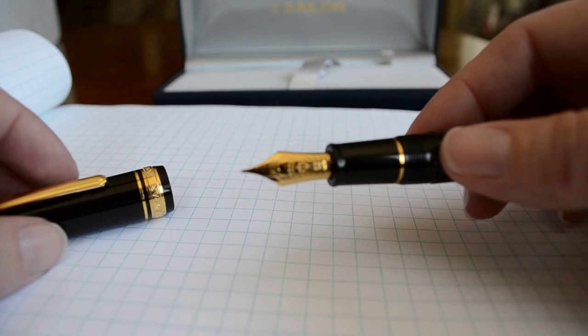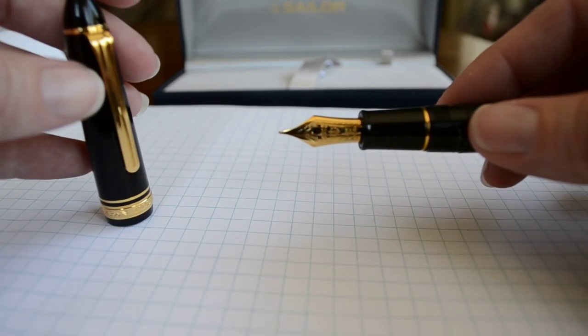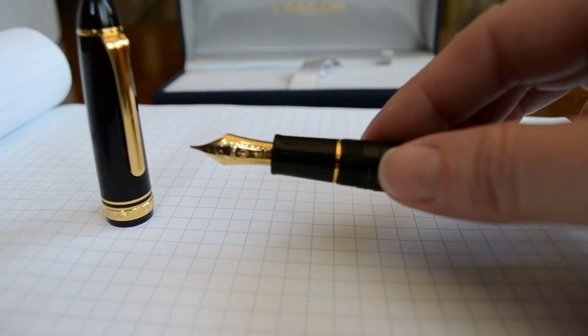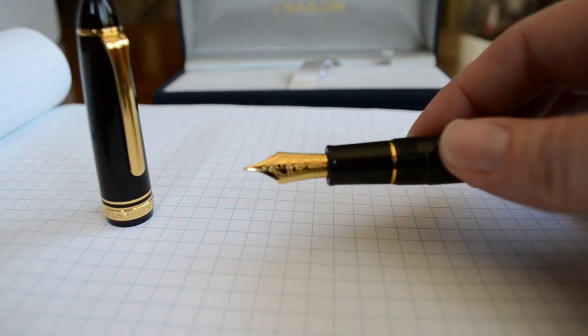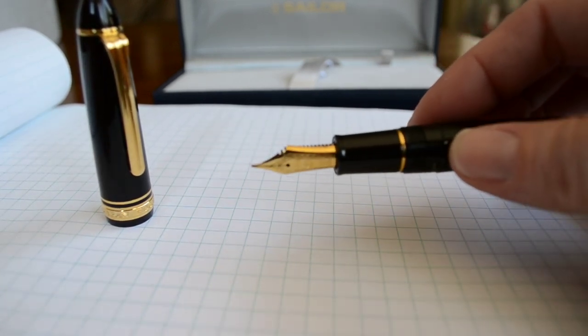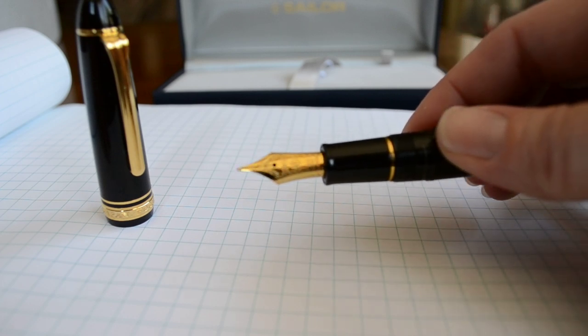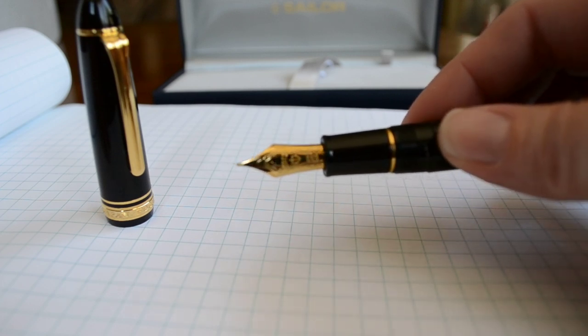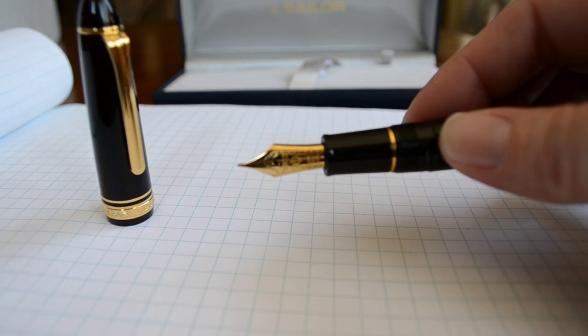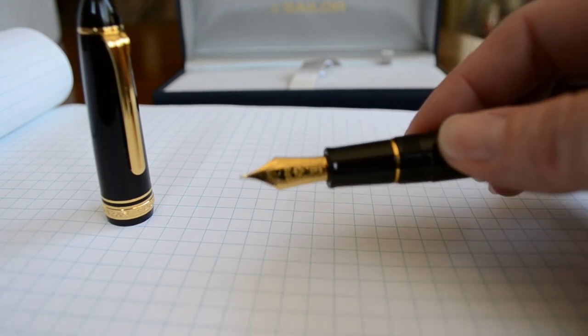This specific nib here on the 1911 Large is a 21-karat solid gold—the smoothest nib I've used ever so far with fountain pens. It is a beautiful writer. There is an anchor stamped on the 21-karat gold nib with some filigree work stamped around that.